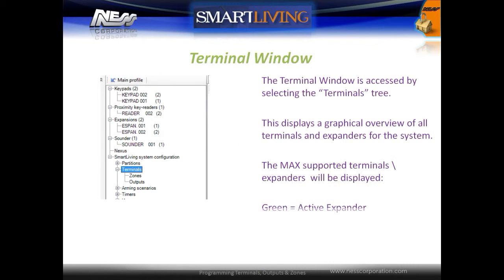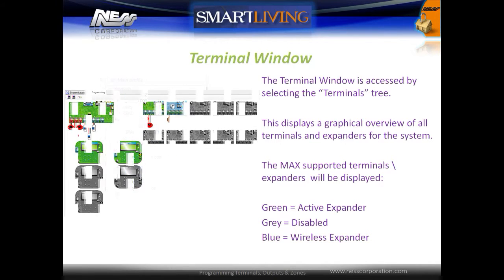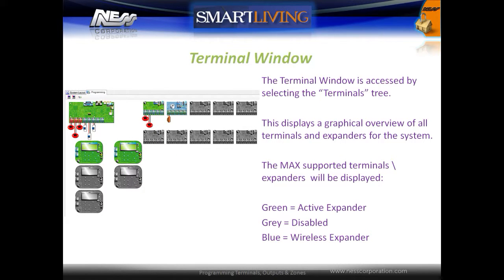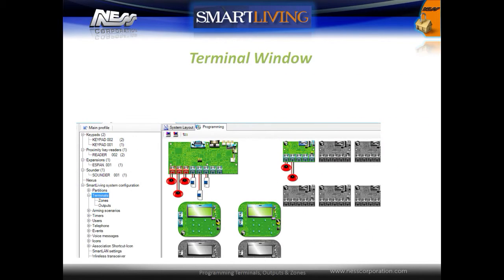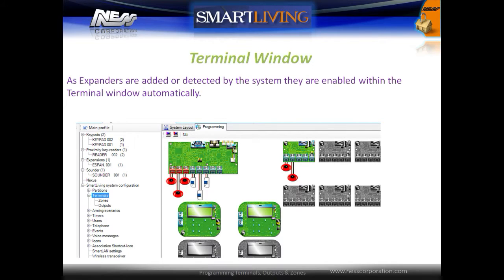The terminals window is accessed by selecting the Terminals tree under the System Configuration. This displays a graphical overview of all terminals and expanders for the system and also shows the maximum number of modules supported. Expanders in green are active, grey ones are disabled, and blue means a wireless expander.